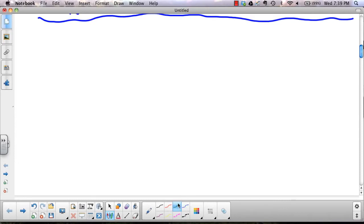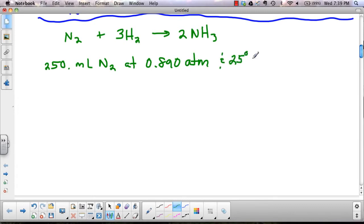So let's try another reaction here. For instance, nitrogen gas reacts with 3 hydrogen gas to make 2 ammonia gas. So these are all gases. We're going to say that 250 milliliters of N2 gas at 0.890 ATM and 25 degrees Celsius is going to react with an excess of hydrogen. So no limiting reactant. And we want to know how many grams of ammonia is formed.